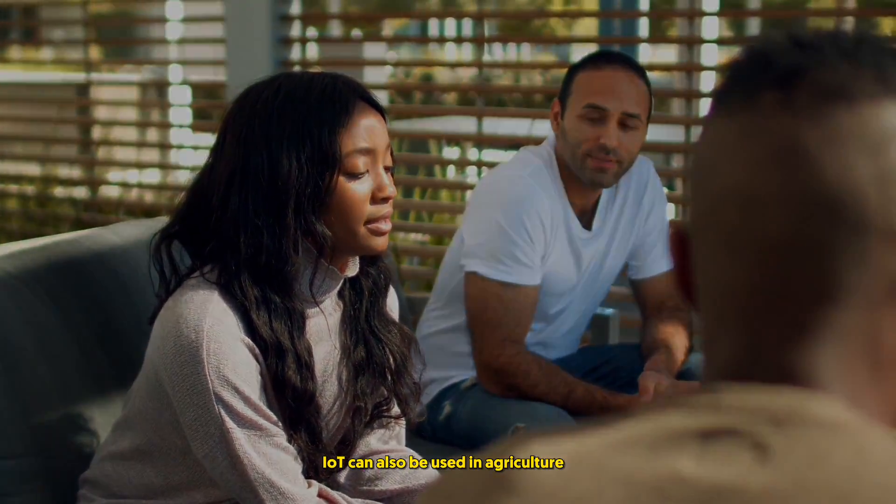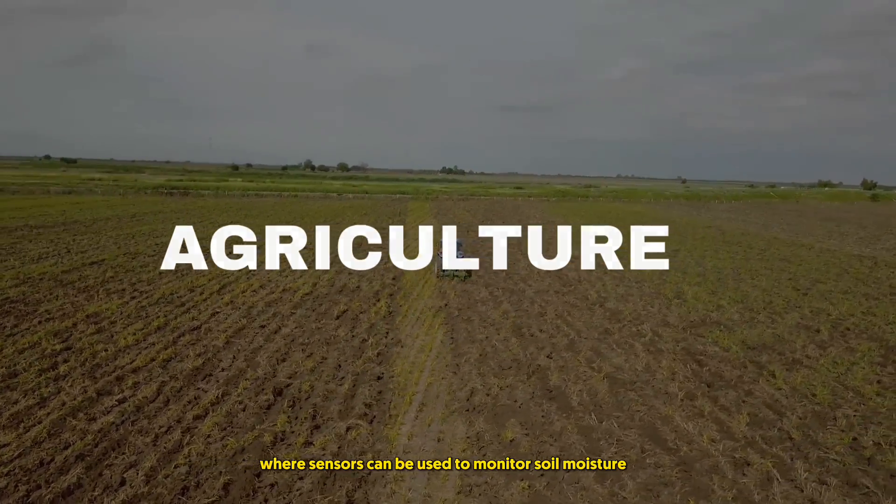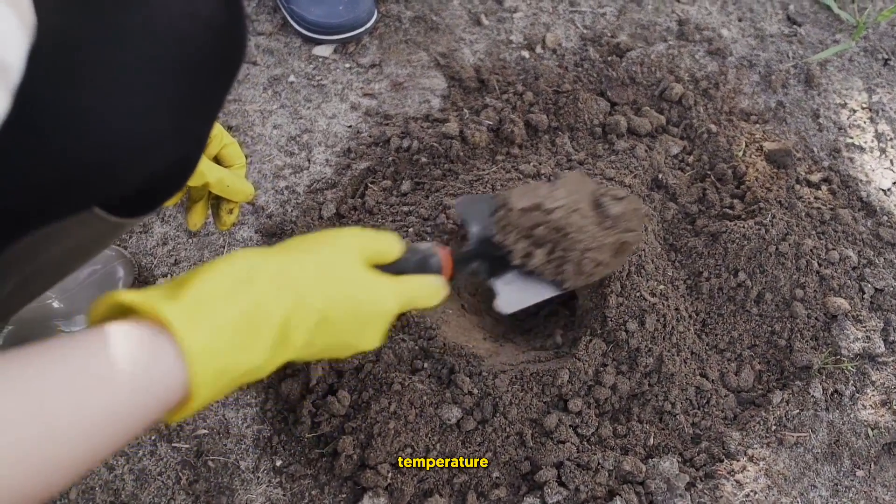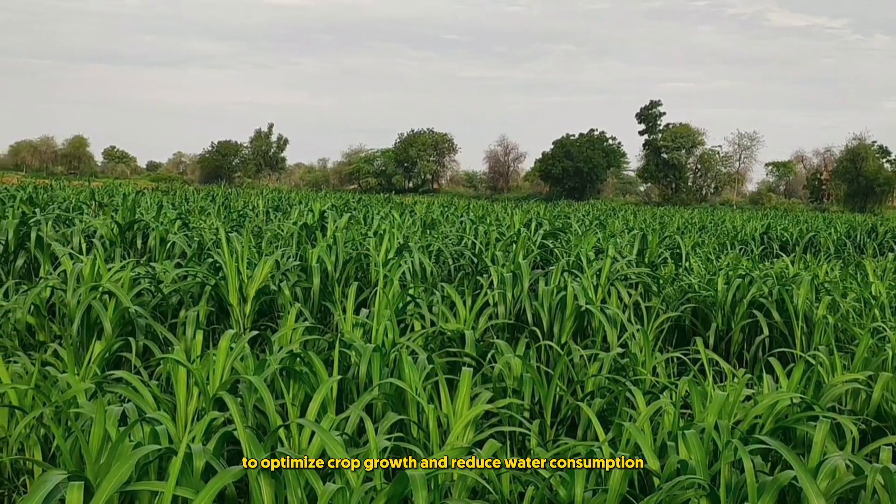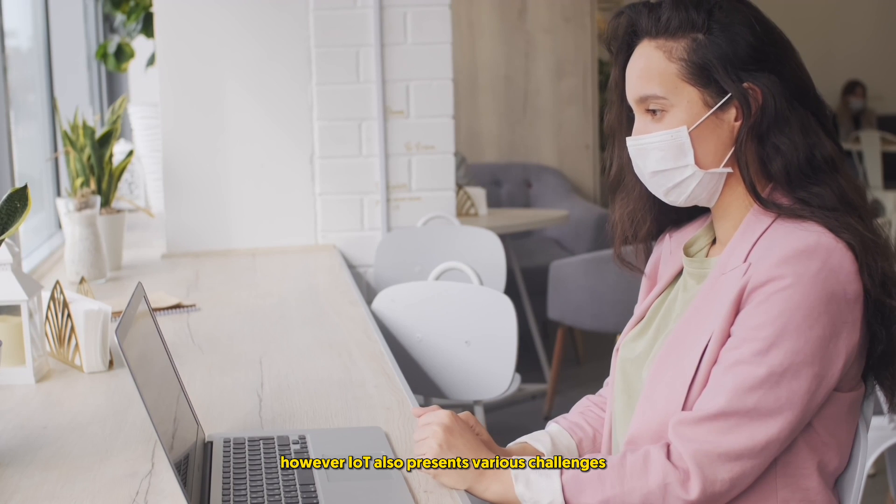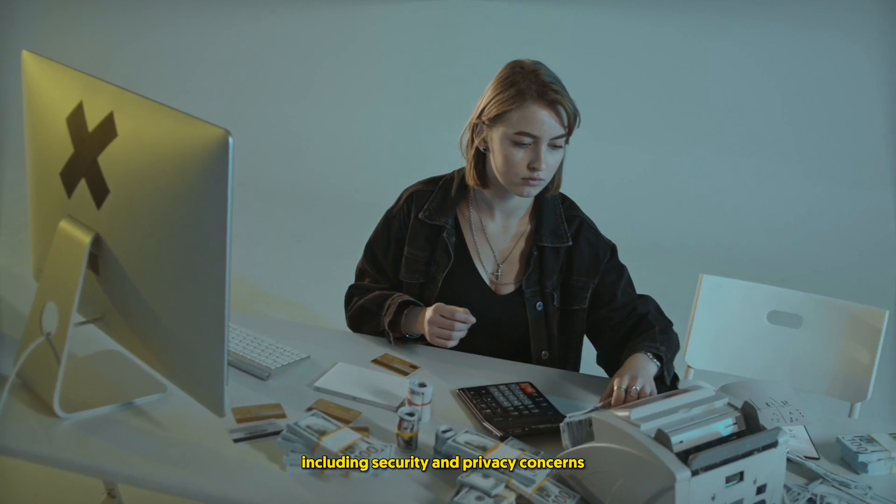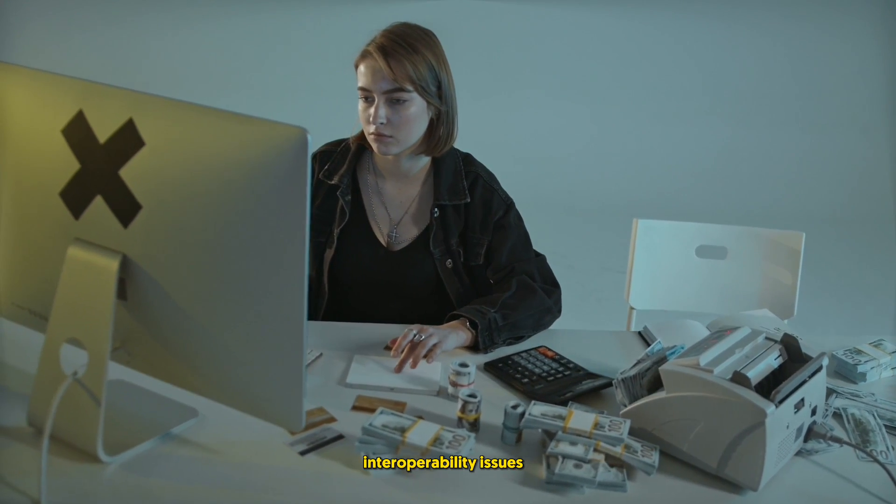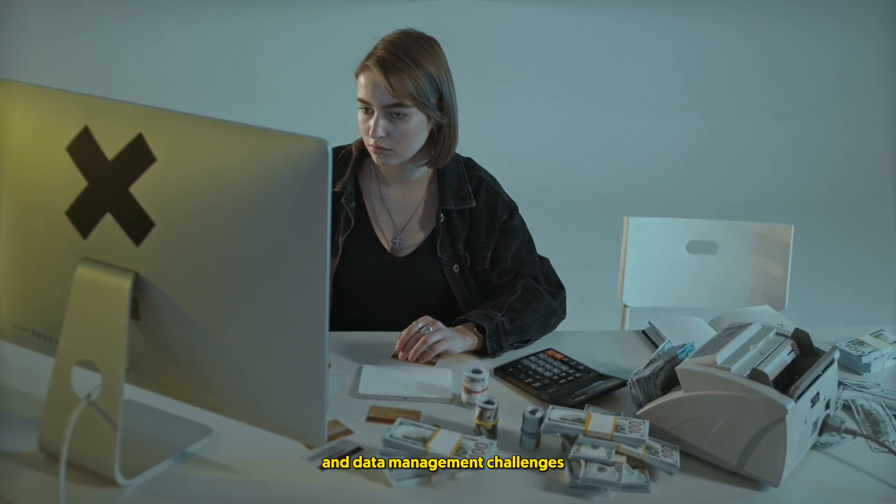IoT can also be used in agriculture, where sensors can be used to monitor soil moisture, temperature, and other environmental factors to optimize crop growth and reduce water consumption. However, IoT also presents various challenges, including security and privacy concerns, interoperability issues, and data management challenges.